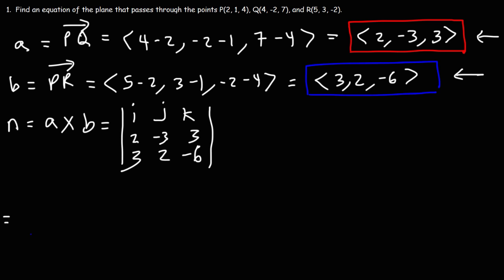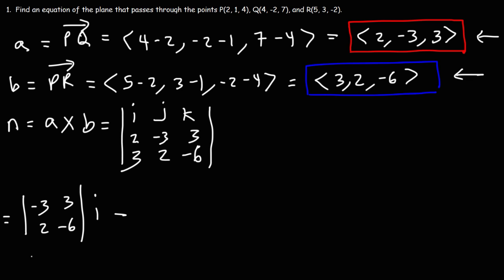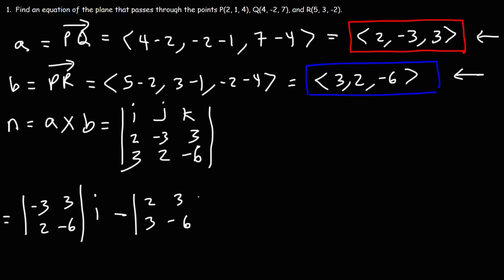We focus on i in the first row, first column, leaving behind the 2 by 2 matrix: negative 3, 2, 3, negative 6 — times i, then minus. Next is j in the first row, second column, leaving behind 2, 3, 3, negative 6 — times j. And for k in the first row, third column, the 2 by 2 matrix is 2, 3, negative 3, 2 — times k.